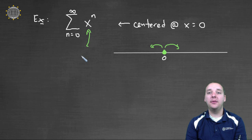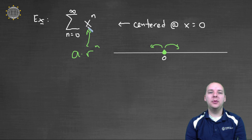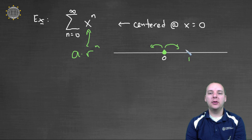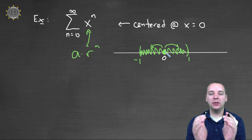It looks a lot like a geometric series: a times r to the n, where a equals one and r equals x. Thinking back to the geometric series test — a geometric series converges as long as the absolute value of r is less than one, meaning r is between negative one and one. And that's exactly the case here: if x equals one-half, this converges; if x equals seven, this diverges. So we have convergence on the interval from minus one to one.